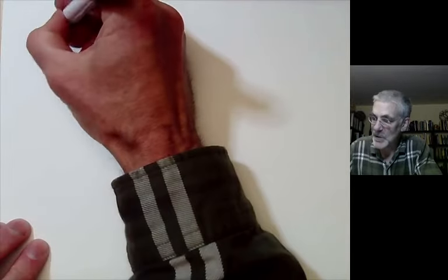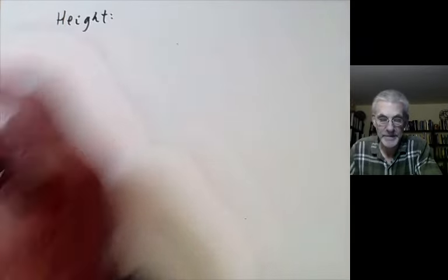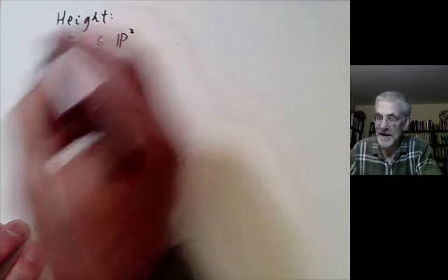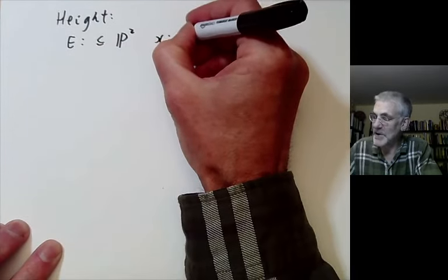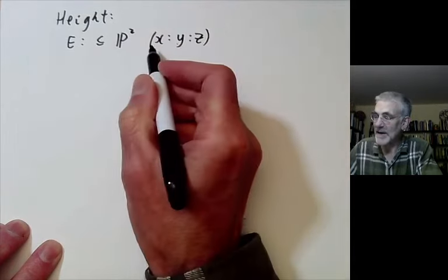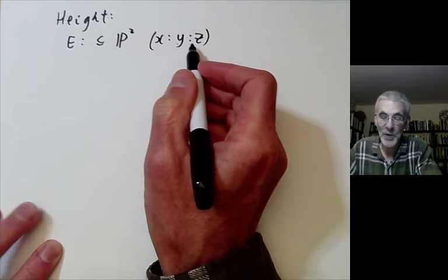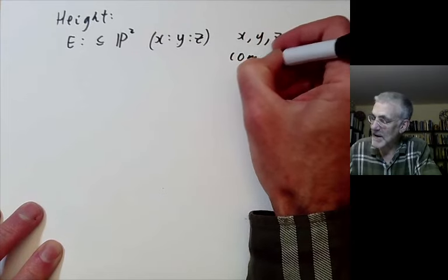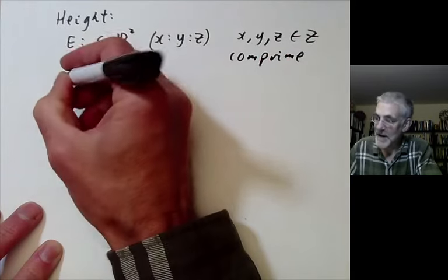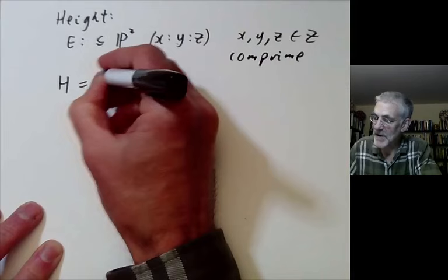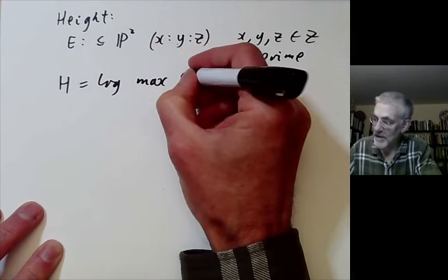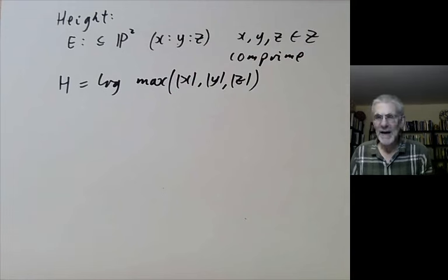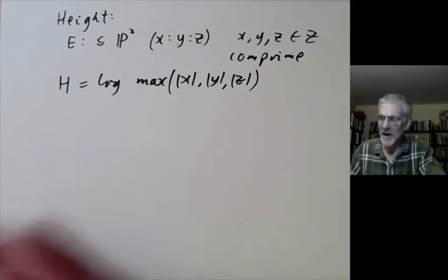Now we discuss what is the height of a point. For an elliptic curve, you can embed it in the projective plane. Then it's got projective coordinates x, y and z. If the point has rational coordinates then we can assume x, y and z are integers. We can also take them to be co-prime. Then we can define the logarithmic height to be the logarithm of the maximum of the absolute values of x, y and z.